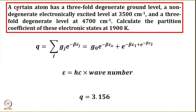Let us try to look at this problem. A certain atom has a threefold degenerate ground level, a non-degenerate electronically excited level at 3500 cm⁻¹, and a threefold degenerate level at 4700 cm⁻¹. The question is to calculate the partition function of these electronic states at 1900 Kelvin.